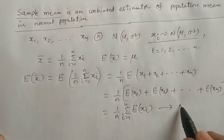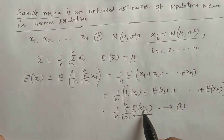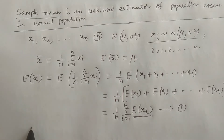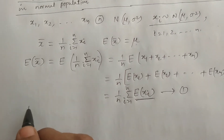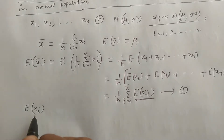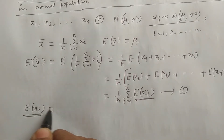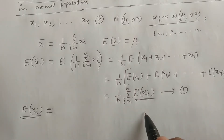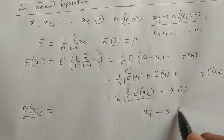If we consider equation 1 and calculate expectation of xi, that is the expectation of a sample observation, we can substitute the value to calculate expectation of x bar. The expectation of xi is the expected value of the sample observation which is drawn from the population. For a discrete random variable, xi is one sample observation drawn from the population capital X.